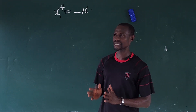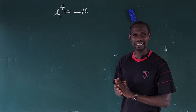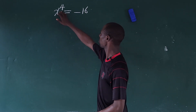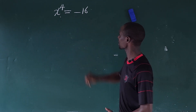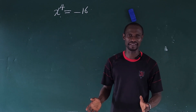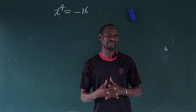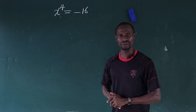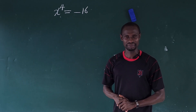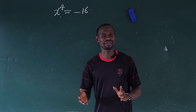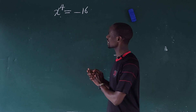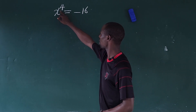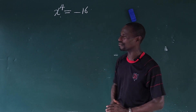Hello everyone, welcome to today's tutorial. We have another nice math challenge: x to the power of 4 equals minus 16. What would be the value of x that satisfies this? In other words, we have to solve for all four roots of this math problem. On this channel I have solved a similar challenge where the question was x to the power of 4 equal to minus 4.